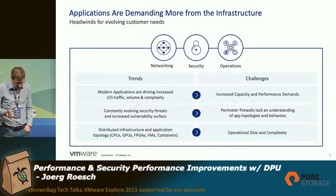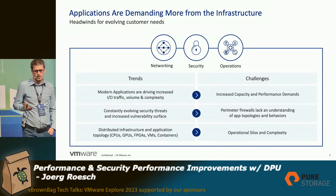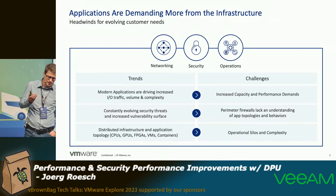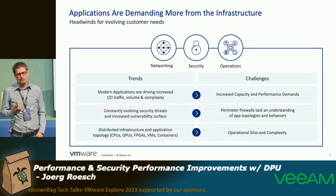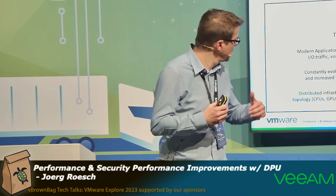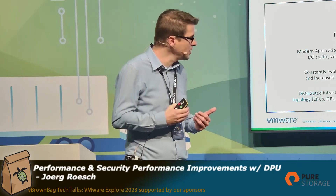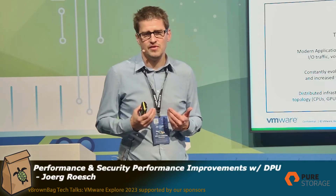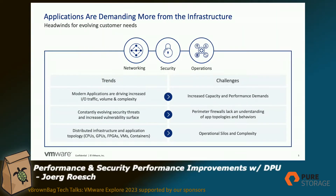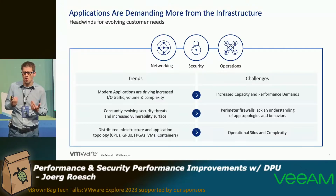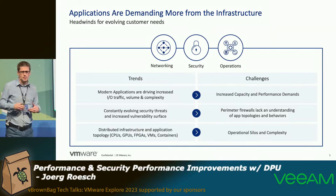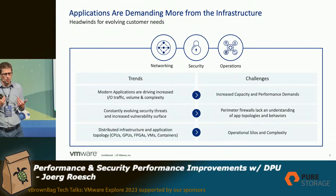What are the challenges today? We talked a lot about this at this conference as well. We have all this cloud-native, Kubernetes, container stuff, which requires a lot of IO traffic, volume, complexity, and so on. On the other hand, our security threats are evolving. This means it's not enough to have a dedicated north-south firewall in front of your data center and not care about your applications inside or about your flows, because you have no clue about your application topology and behaviors.